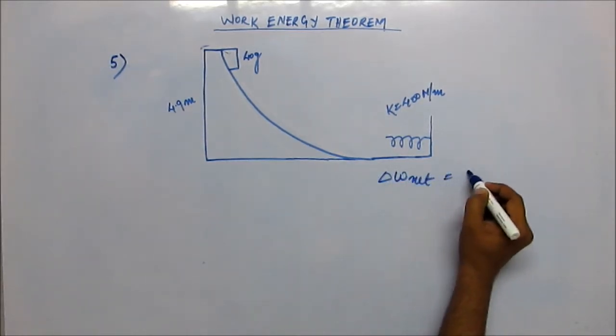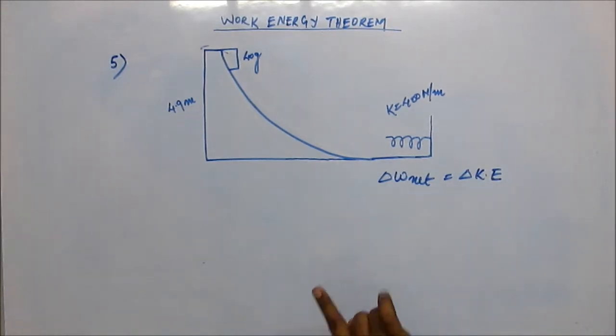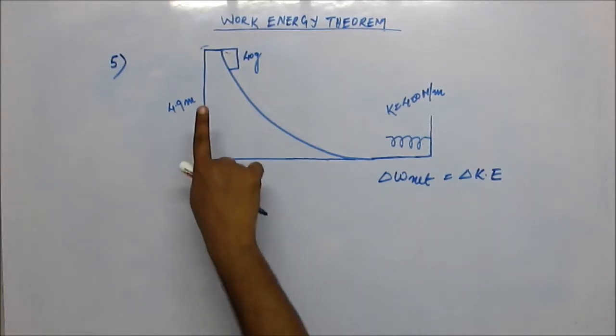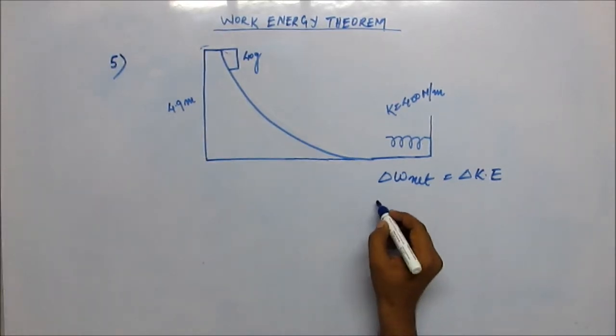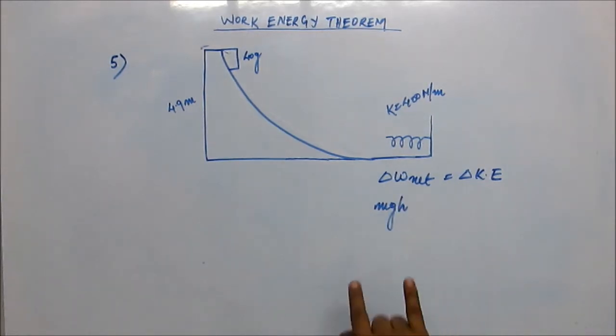Net work done is work done by all the forces. The forces here would be gravity and the spring force. The work done by gravity depends simply on the vertical shift which would be 4.9 meters, so work done by gravity is mgh. It doesn't depend upon the horizontal drift.